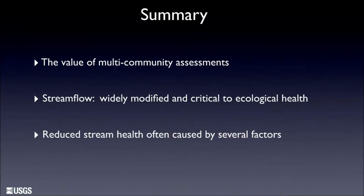Point number two: natural stream flows across the country are widely modified and are an important reason why many streams have impaired health. Stream flow is such an overarching and important part of streams that remediation of chemical pollutants like nutrients and pesticides may not get us all the way to healthy streams if we don't also consider that streams need some semblance of natural flow patterns. Truly, water quality and water quantity are inexorably linked.